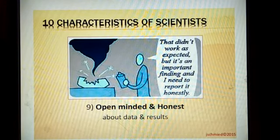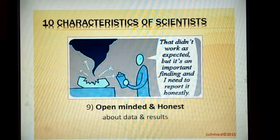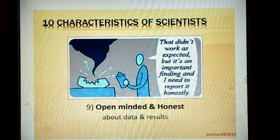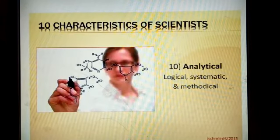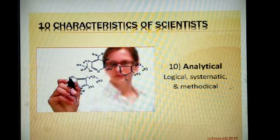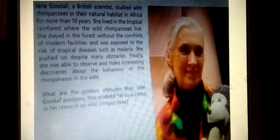A very positive attitude of a scientist is being open-minded and honest. While doing research and finding solutions, he should not cheat or lie to his team — whatever he is doing, he should report it accurately in his research. A scientist is also always logical, systematical, and methodological.